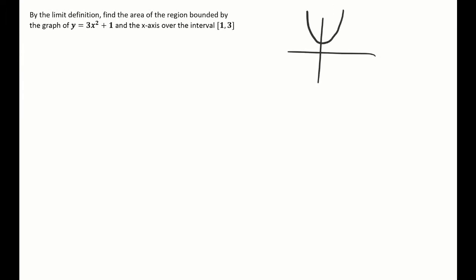Let's get a picture of what this looks like. It's a parabola getting skinnier by a factor of 3 and shifted up 1. So it's a parabola shifted up 1 going from x equals 1 to 3, and the region we need is right there.